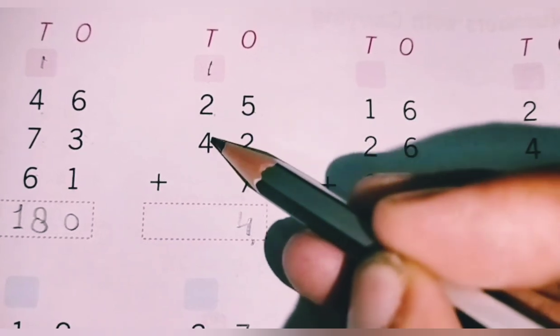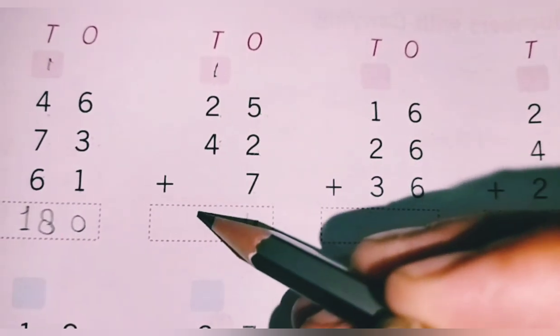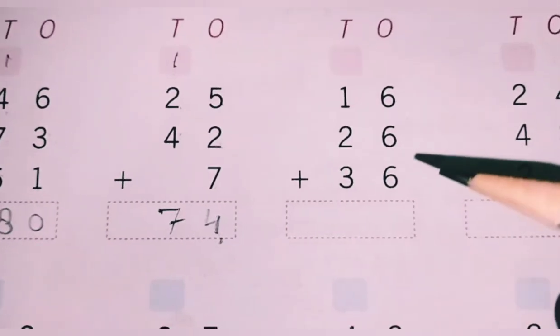2 plus 4, 6. There is nothing below. How much is it? 7. Okay, next.